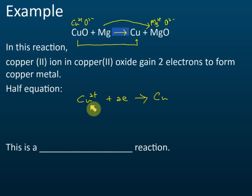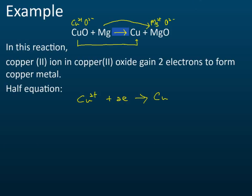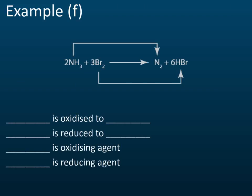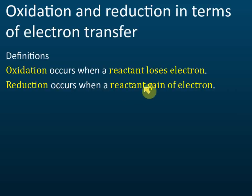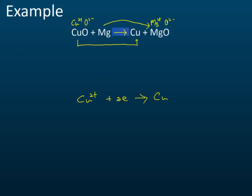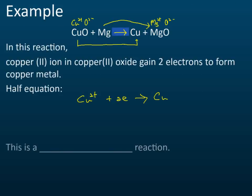So can you tell whether the copper ions undergo oxidation or reduction? They undergo reduction — because they gain electrons. Going back to the definition: if a substance gains electrons, it is reduction. So in this case, copper ions gaining electrons means this is a reduction reaction.